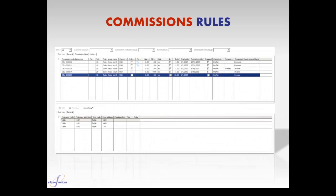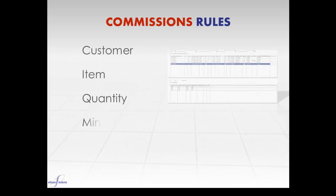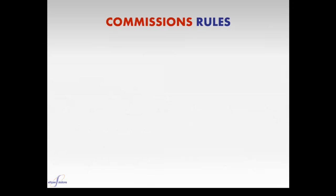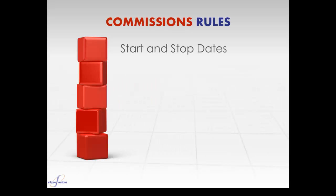With Commissions for AX, the commission rules or agreements are created and stored in a single system. Rules can be generated for employees or groups of employees and sales groups, such as outside companies like brokers, who sell your materials and are associated to customer, item, quantity, minimum amounts, and employee or broker. Rules can be set up with separate dates that automatically start and stop and can include unit of measure conversion calculations, both of which serve to eliminate manual tedious processes.